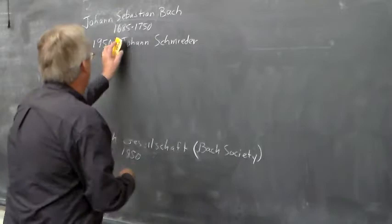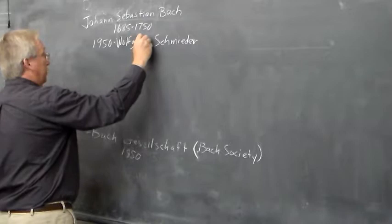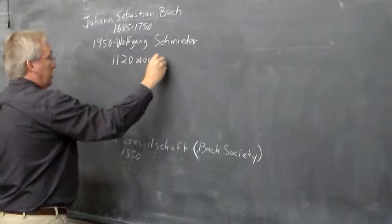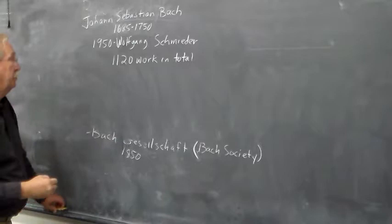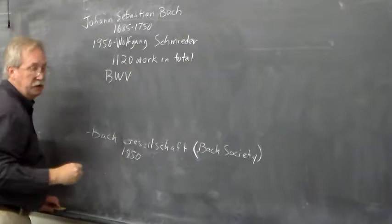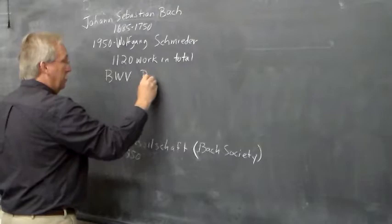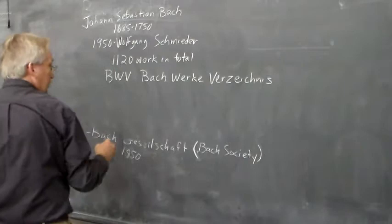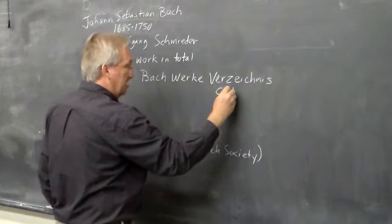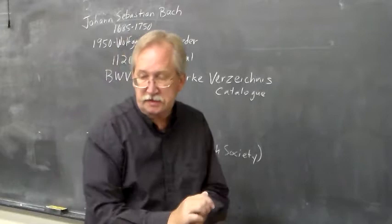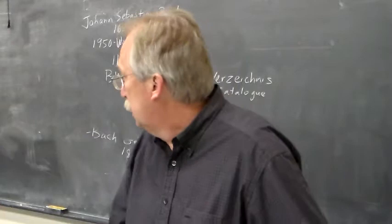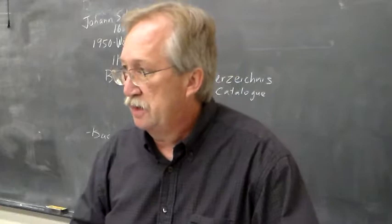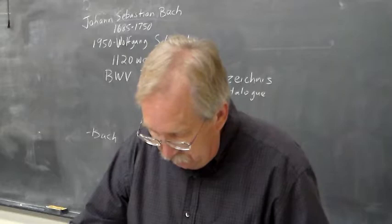Schmider's catalog has 1120 works in total. And these are known by their BWV, which stands for Bach-Werke-Verzeichnis, which just means Bach Work Catalog. So Bach's works are designated by their BWV number, and this catalog wasn't chronological. It was according to different genres. So the first 200 or so are his cantatas, and so forth.